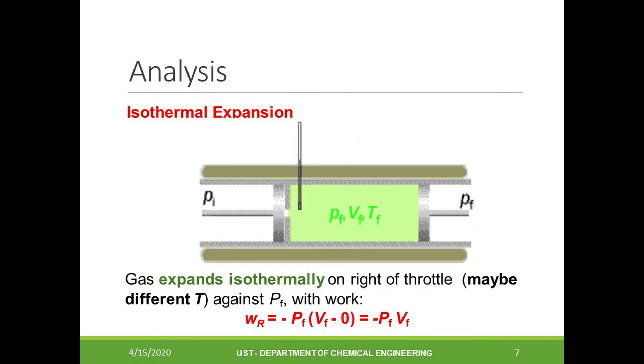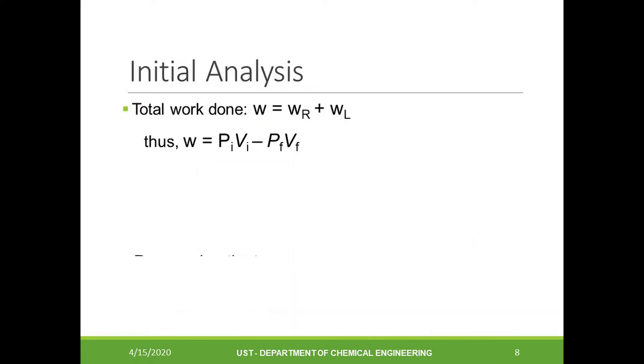Inside compartment two, the process starts with volume two equal to zero and it ends with a certain volume V2, so the work done on the right side is given by this equation. The total work done is equal to the sum of the work during gas compression and gas expansion. Therefore, the total work will be given by this equation.